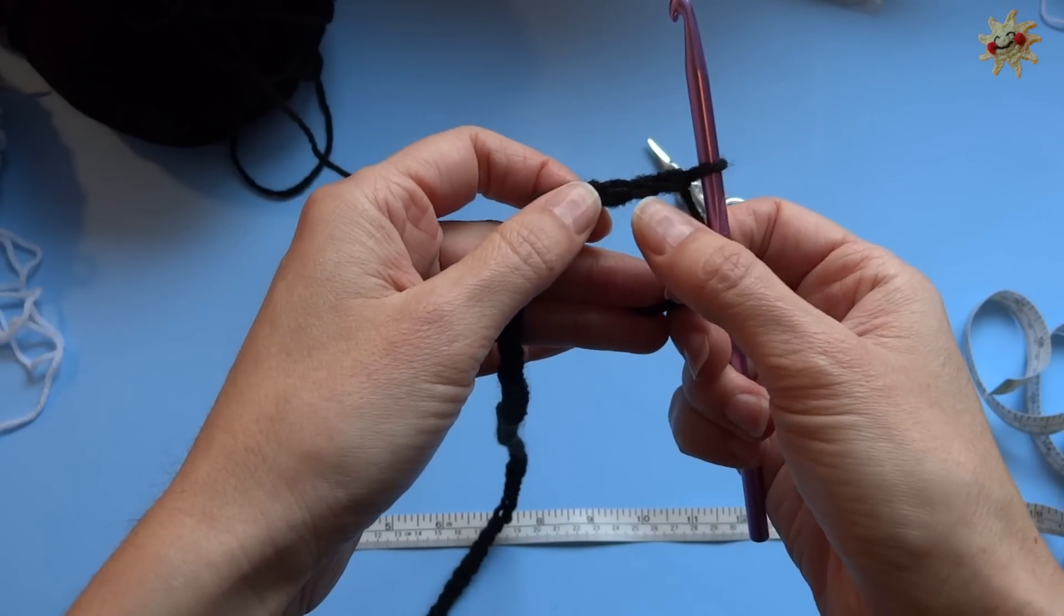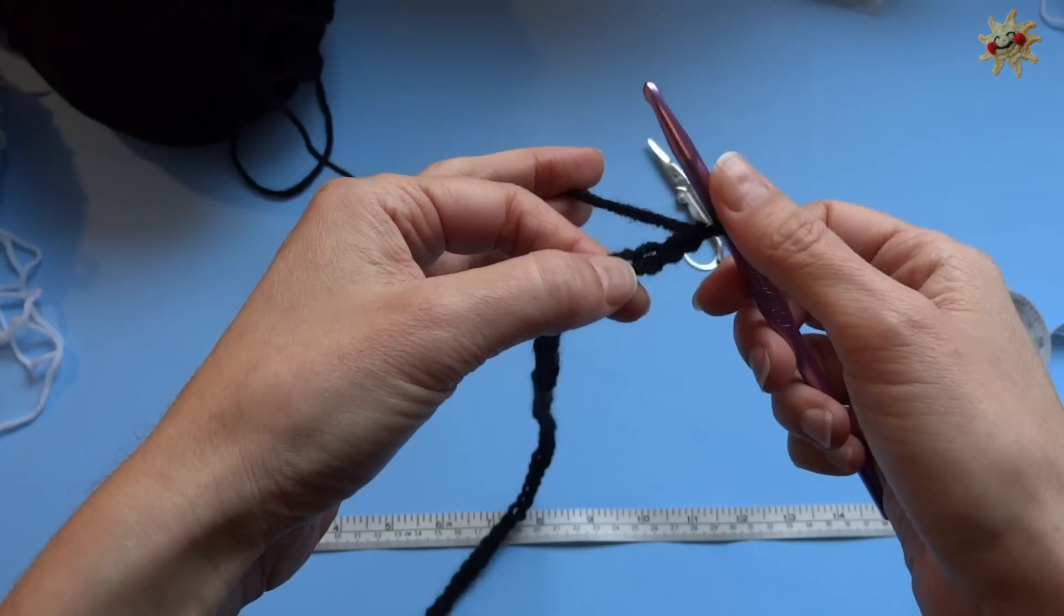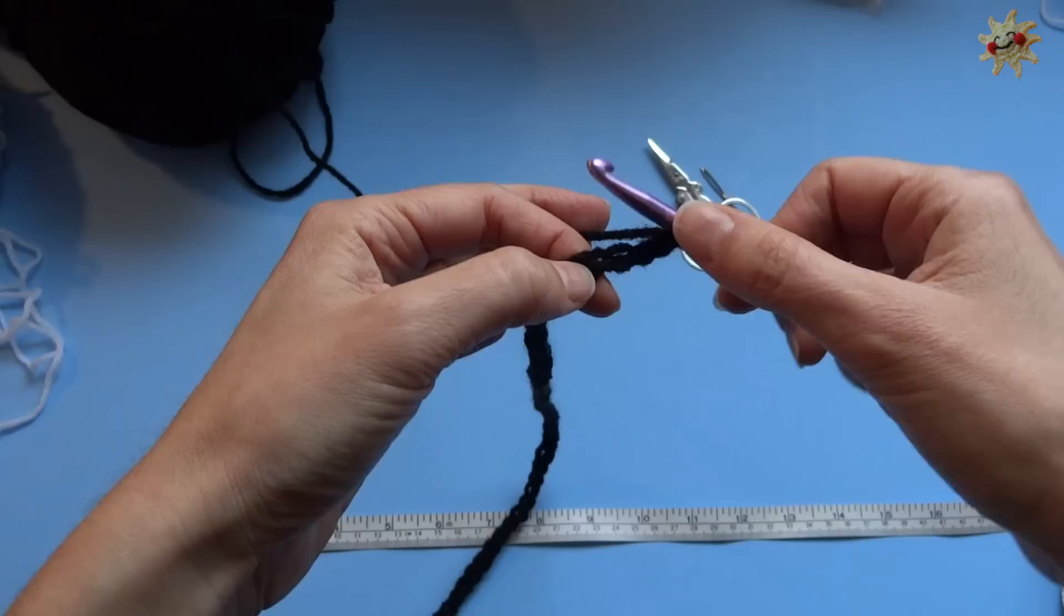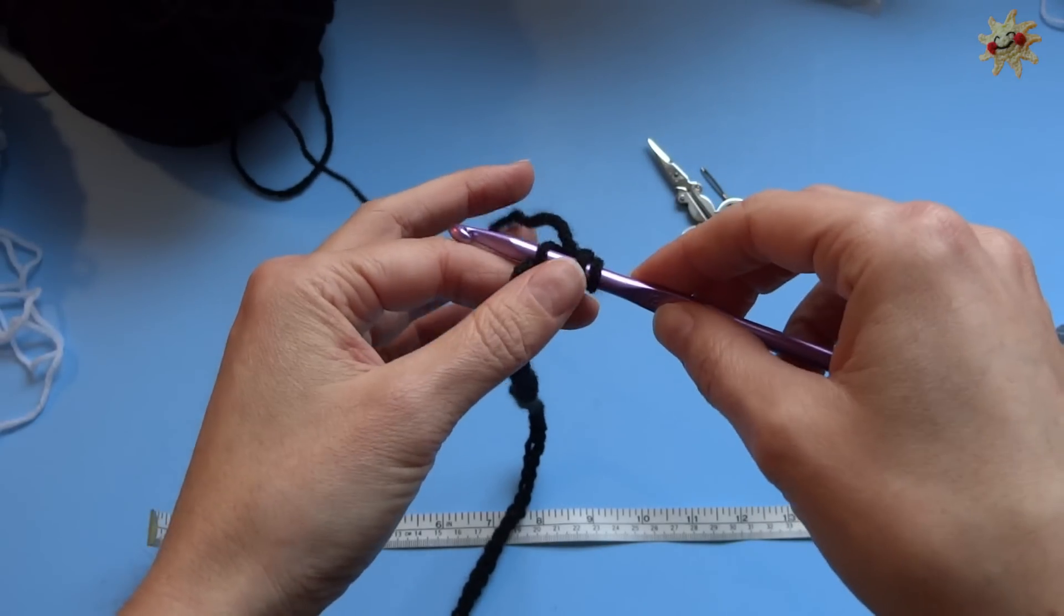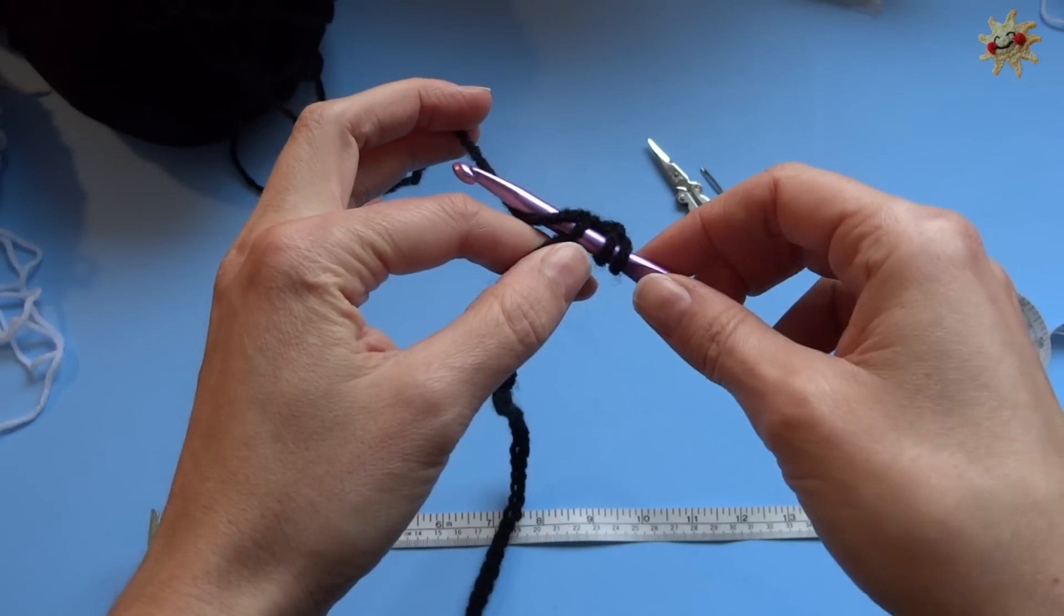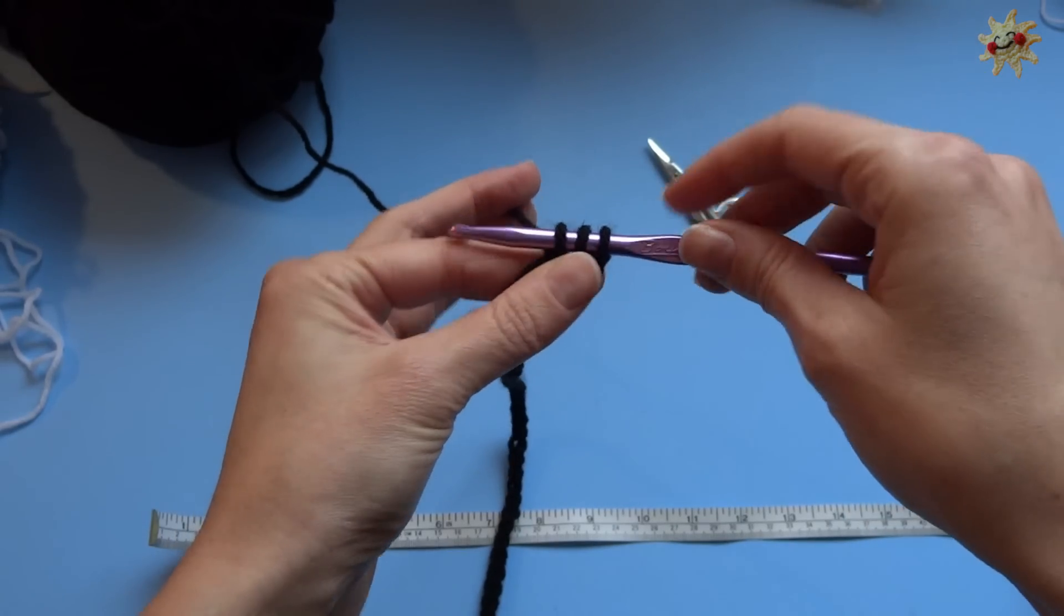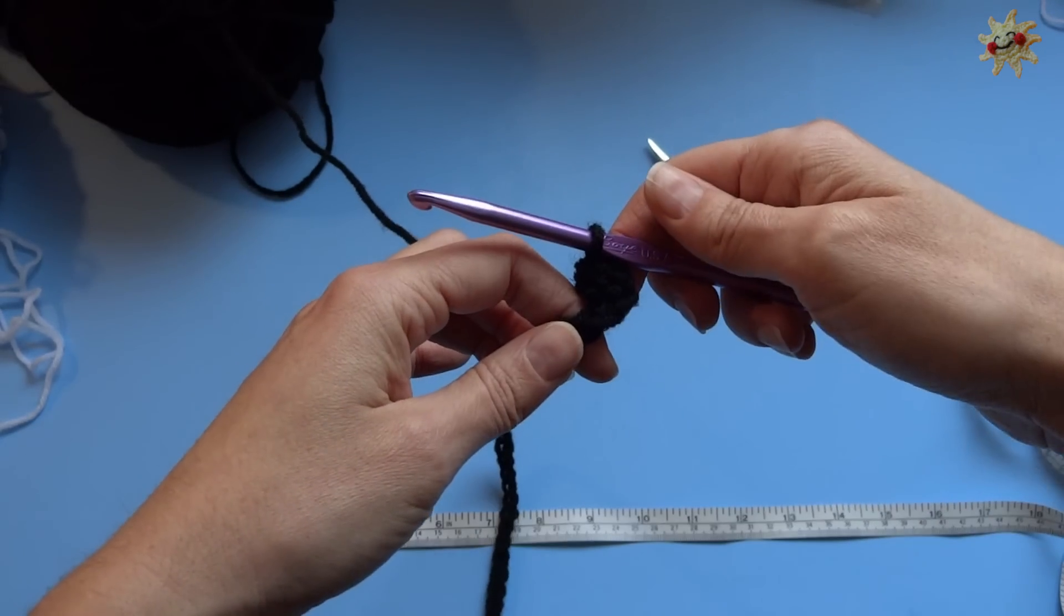I'm going to half double crochet in the third chain from the hook. So you count backwards, one, two, three. That's the chain you work into. Half double crochet, as we know, is to wrap your yarn, pass your hook through that stitch that you want to work in, wrap your yarn, pull up a loop. So you have one, two, three loops on your hook. Wrap your yarn and pull through all three. And that's a half double crochet.